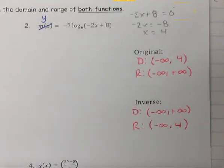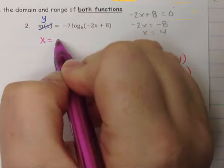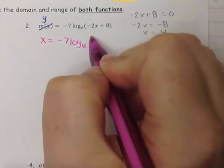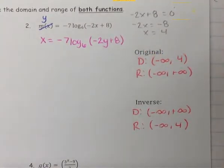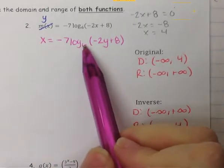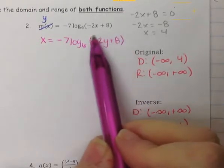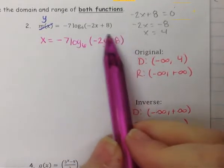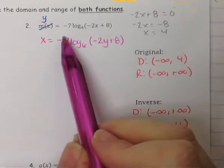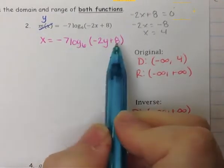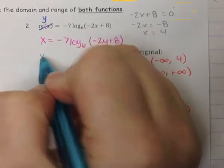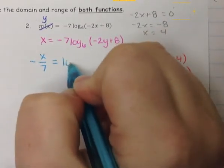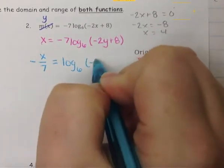Always the first step — make sure you see a y instead of f(x), then switch your x's and y's. So we have x equals negative 7 times log base 6 of (negative 2y plus 8). Just like with exponentials, we have to get the log and its base alone. This negative 7 does not belong, so we divide both sides by negative 7, giving us negative x over 7 equals log base 6 of (negative 2y plus 8).